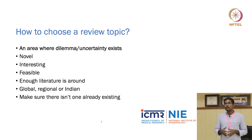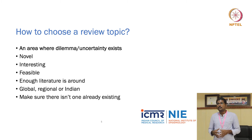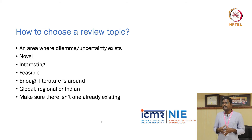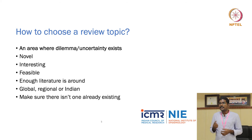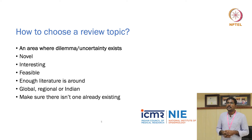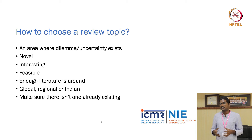Systematic reviews take a long time to complete — typically six months to one and a half years. Make sure you can complete it in a reasonable timeframe before the topic becomes outdated. Regarding literature availability, it is possible to do a systematic review with limited literature — Cochrane even publishes 'empty reviews' where no eligible article is found. However, as a beginner, I would suggest choosing an area where enough literature already exists.